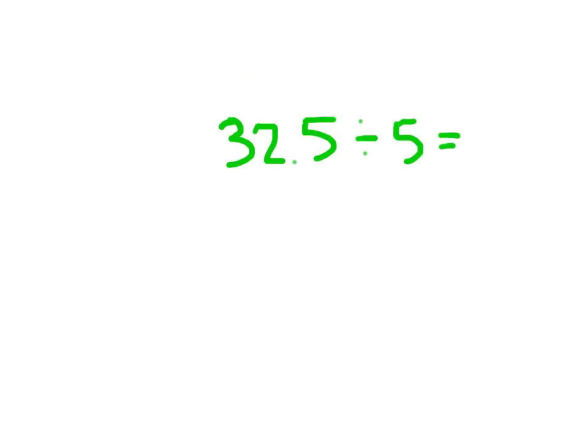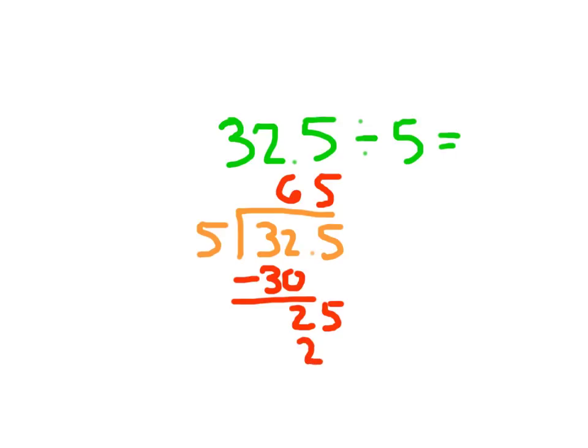Here I have 32.5 divided by 5. You'll notice here that I wrote this from left to right. Our divisor is still 5 here, and I can rewrite this as 32.5 as our dividend and 5 as our divisor. 5 cannot go into 3, but 5 can go into 32. 5 goes into 32 six whole times, because 6 times 5 is 30. 32 minus 30 is 2, and I bring down the 5. 25 divided by 5 is 5, and 5 times 5 is 25, and 25 minus 25 is 0.